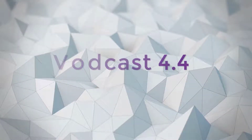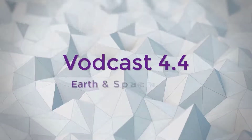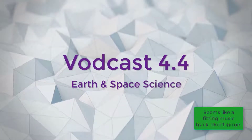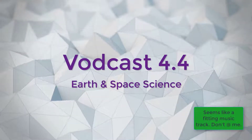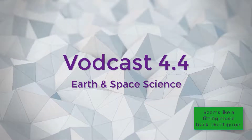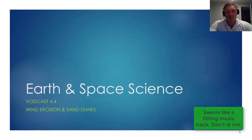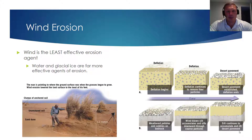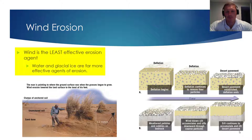Hello and welcome to video podcast 4.4. This is the final vodcast for chapter 4, and in it we will focus on wind erosion and sand dunes. I don't mean to downplay wind erosion — it does occur, and its greatest influence is in desert regions. But wind is the least effective erosion agent that we've considered.